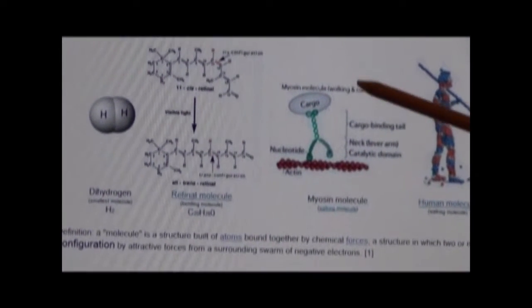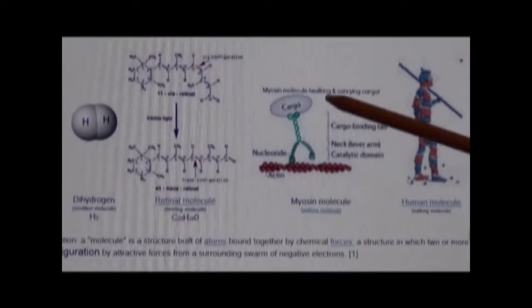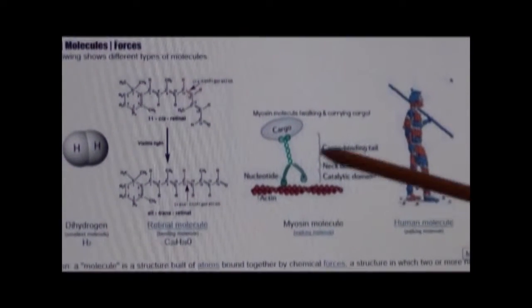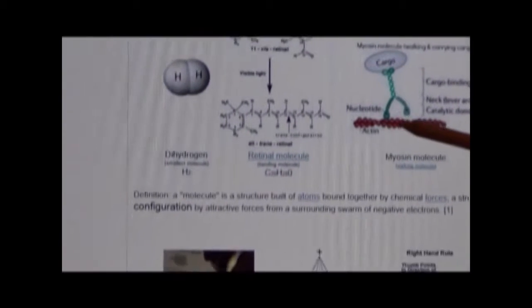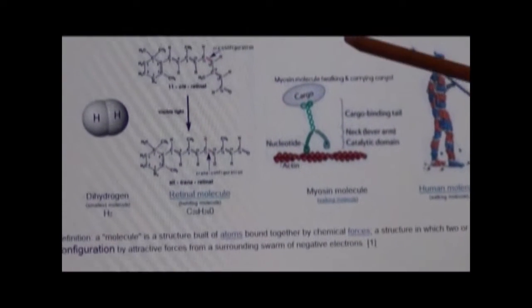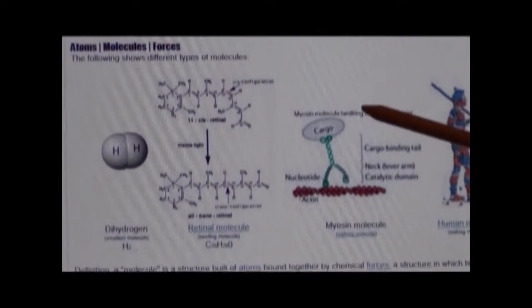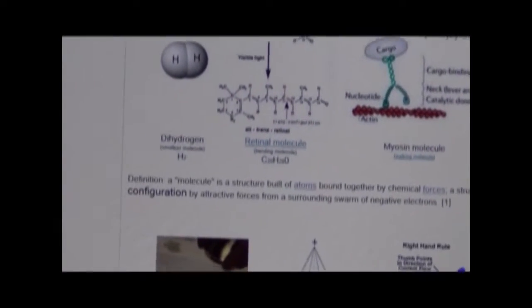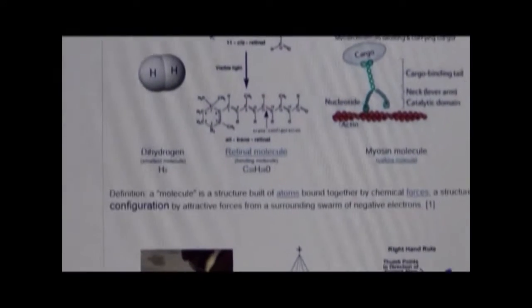Now when you get to bigger molecules, some molecules will start walking. Like this is the one that's inside your body, it's called myosin. And it walks along actin fibers and carries cargo, kind of like a worker at a factory carrying things. So this is a molecule that walks and it carries things. This is almost like a little primitive type of intelligence. And so here's human, it's the bigger version of the molecule.